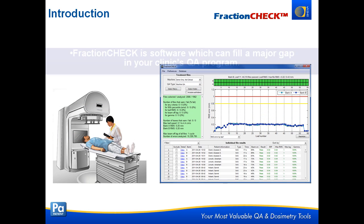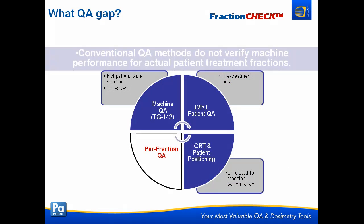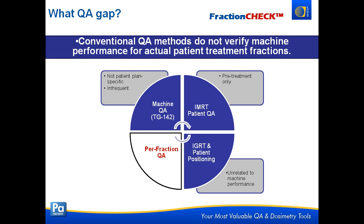Next I'd like to talk about FractionCheck. FractionCheck is a newer tool that fills a major gap in a lot of people's QA programs. Right now, all of our conventional QA methods aren't verifying machine performance for actual treatments. We do a lot of machine QA, but that's not patient specific and it's every week or every month. We do per-patient IMRT QA, but that's usually just pre-treatment. We assume the rest of the fractions are going well. Every day the patient comes in we do IGRT and patient positioning, but it's unrelated to machine performance. This gap of per-fraction machine performance is where FractionCheck comes in.